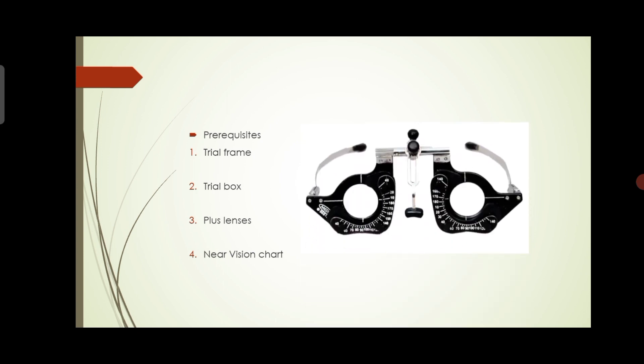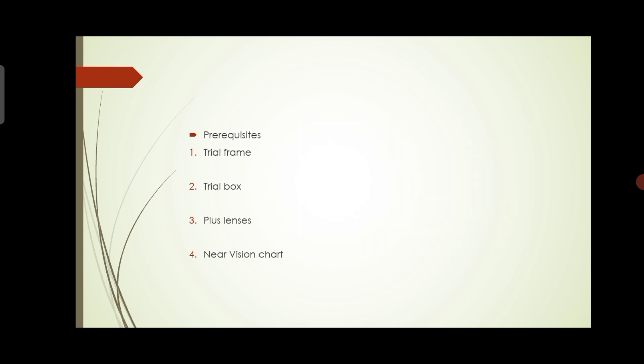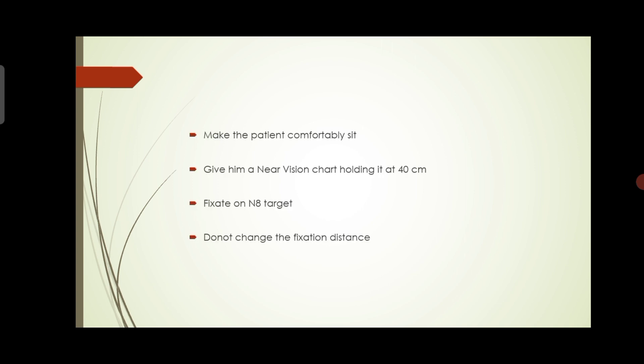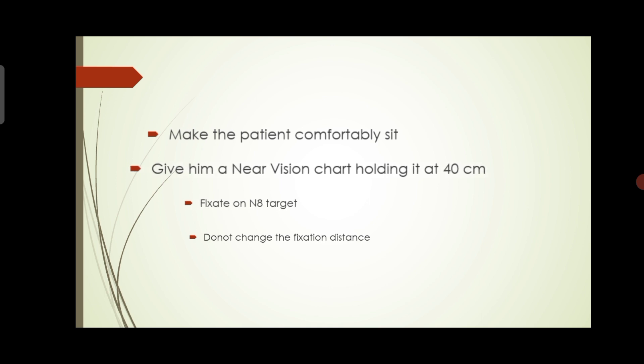Put the trial frame on the patient's eyes and have your trial box ready. Give the patient the near vision chart and let them hold it at 40 centimeters. The patient should sit comfortably. Tell the patient to fix their gaze on the N8 target and not change the fixation distance.